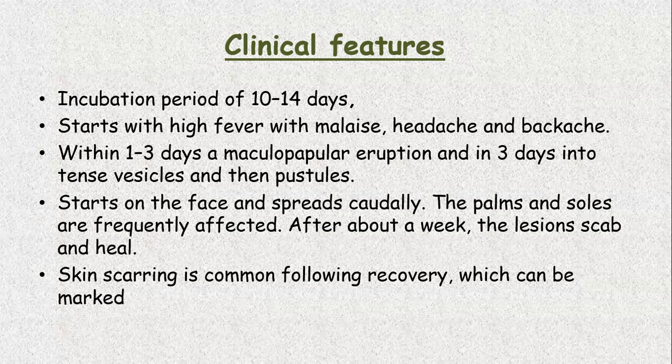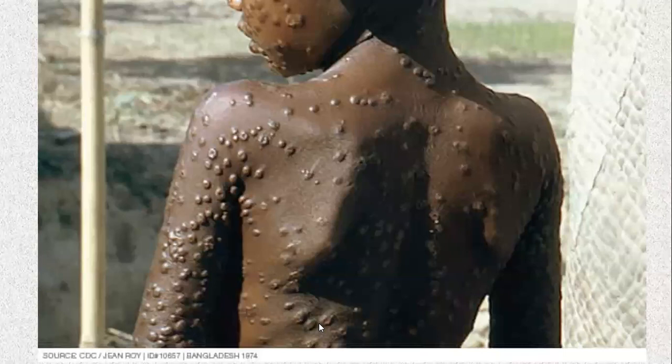Smallpox mainly involves face, hands, and feet — called a centrifugal distribution — while chickenpox mainly involves the centripetal distribution, that is the trunk and thighs. That is why scarring is very common in smallpox as compared to chickenpox. This shows active smallpox infection — you can realize that this is a papillovesicular rash.